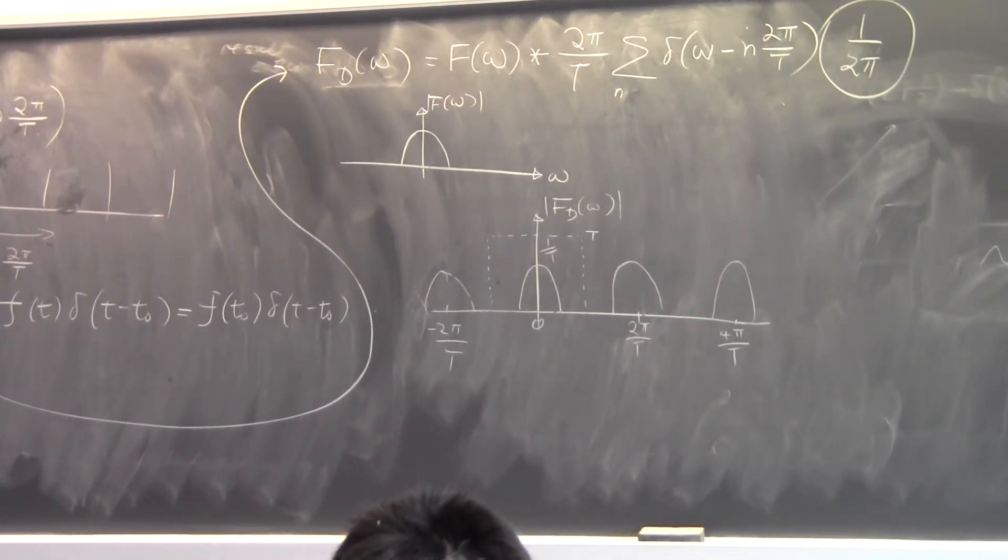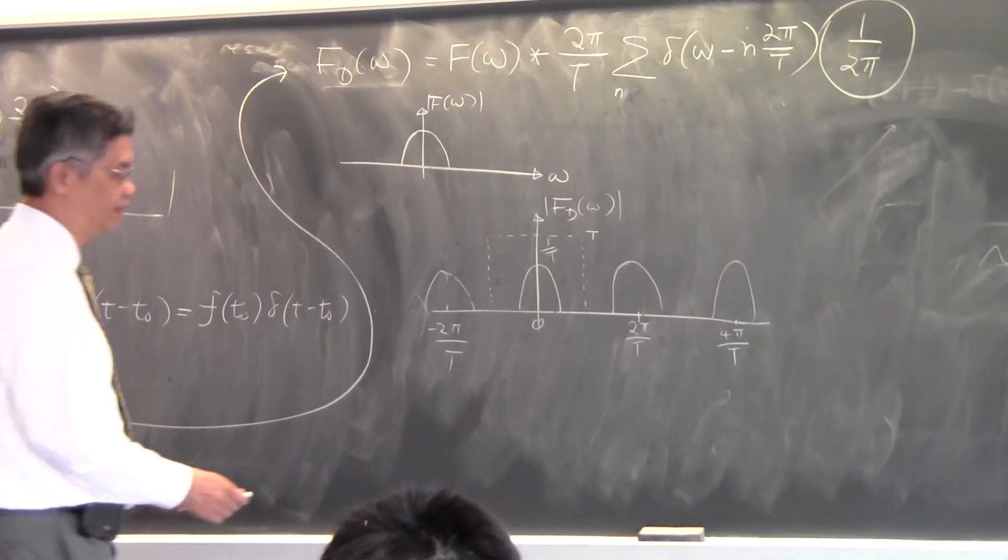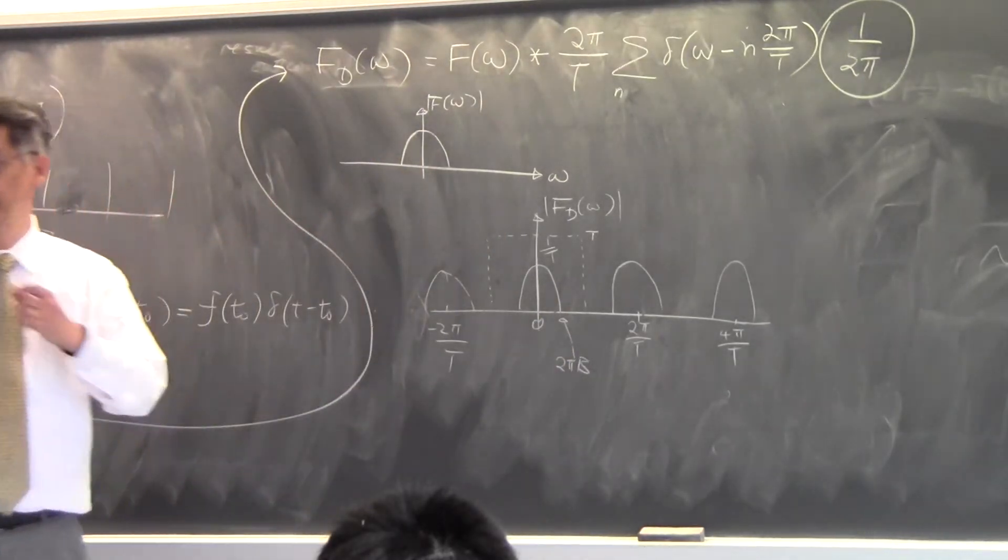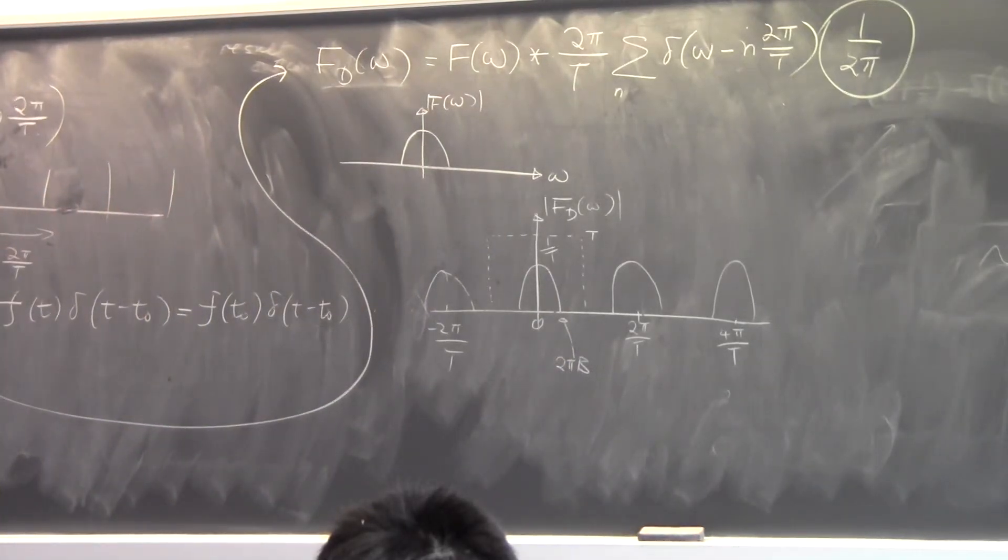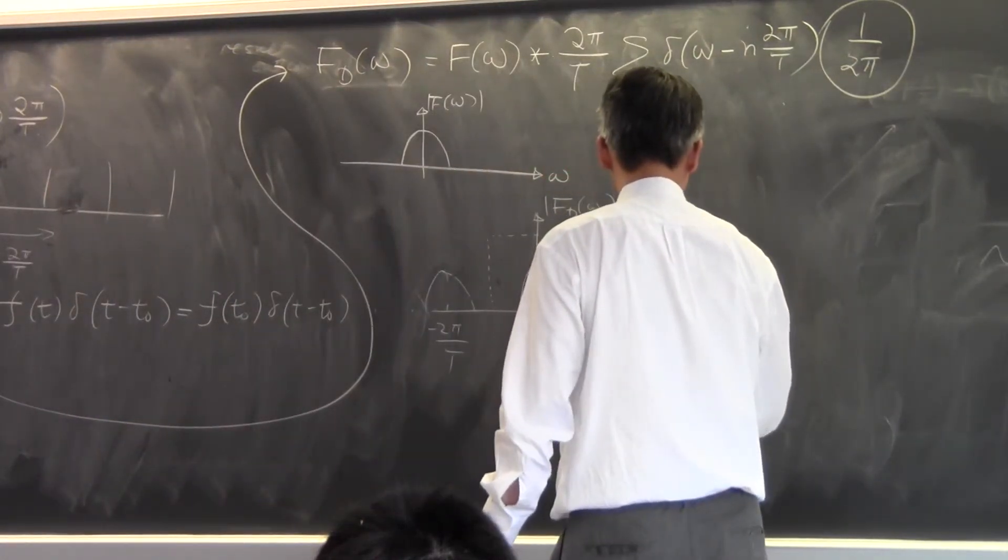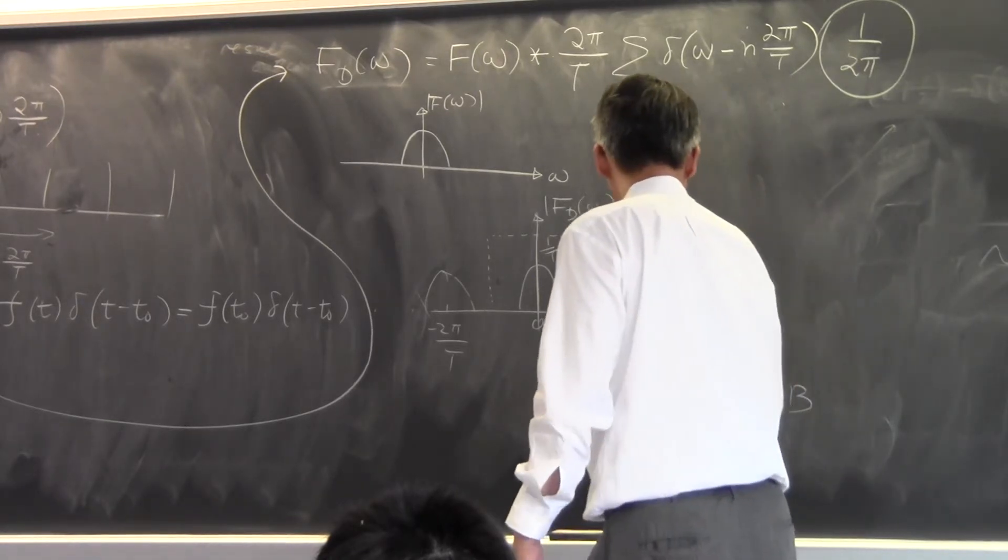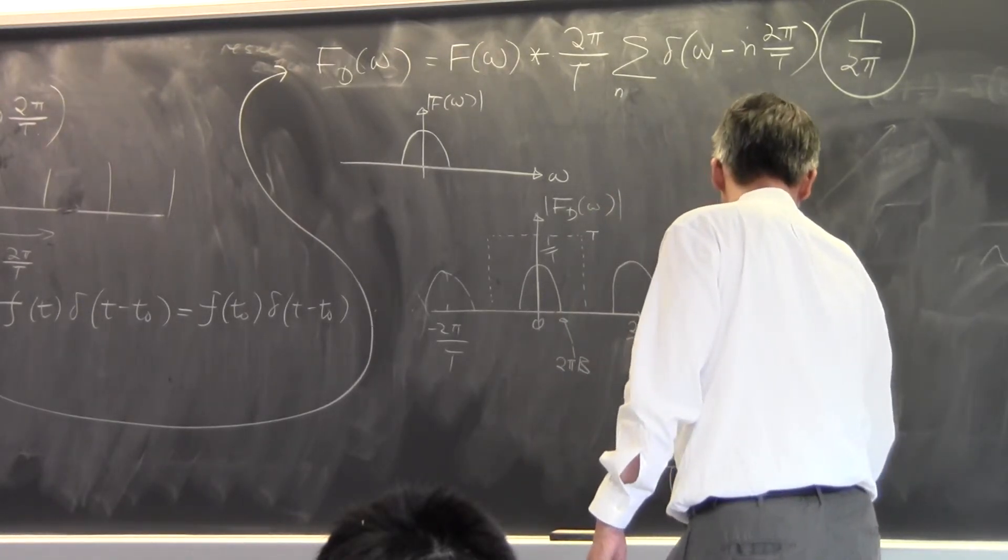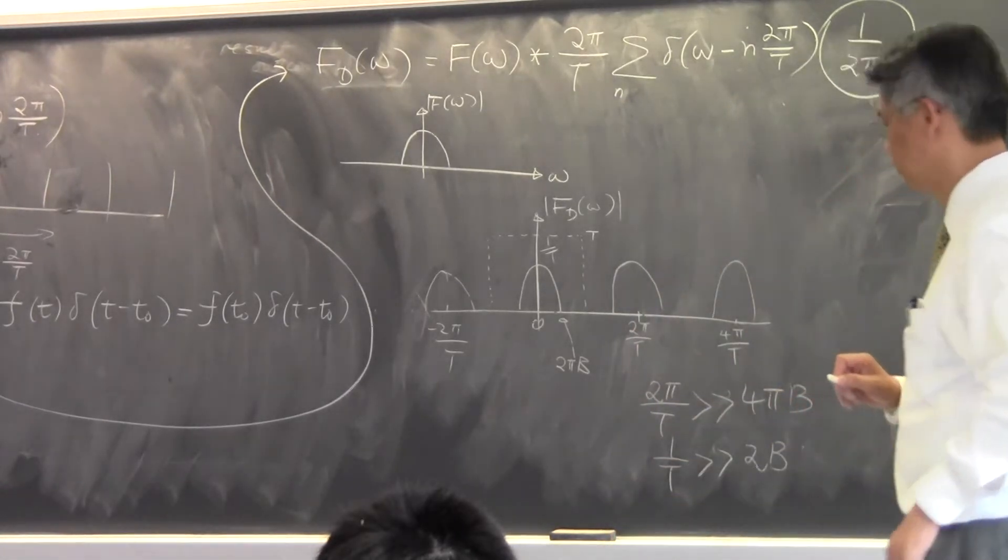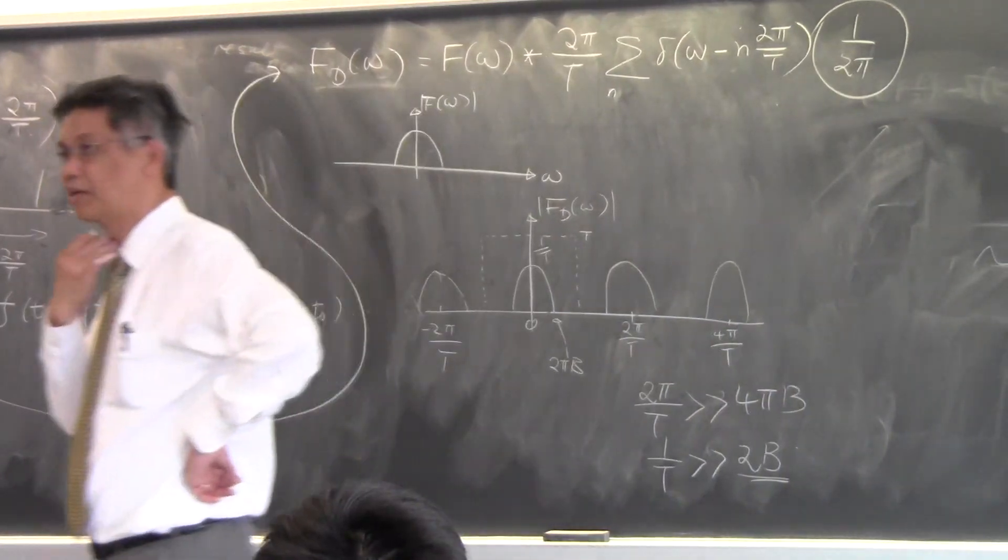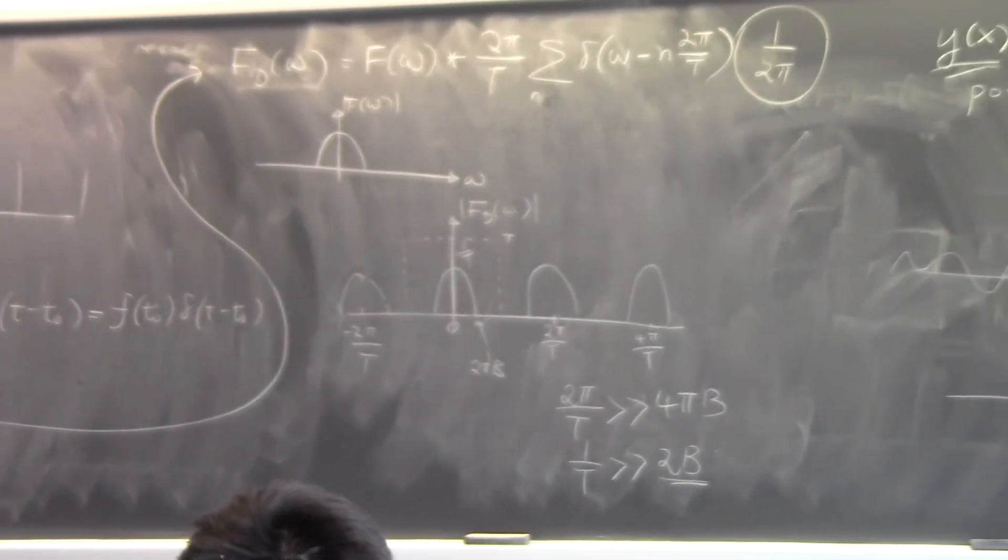So, what is the sampling rate? Say if this number is 2pi times B, where B is the bandwidth of the signal, the signal that you are having, 2pi over T must be larger. 2pi over T must be larger than 4pi over B. Which means that the sampling rate, 1 over T must be larger than 2 times the bandwidth. So, if the bandwidth is 20 kHz, like your voice signal, your sampling rate must be at least 40 kHz.